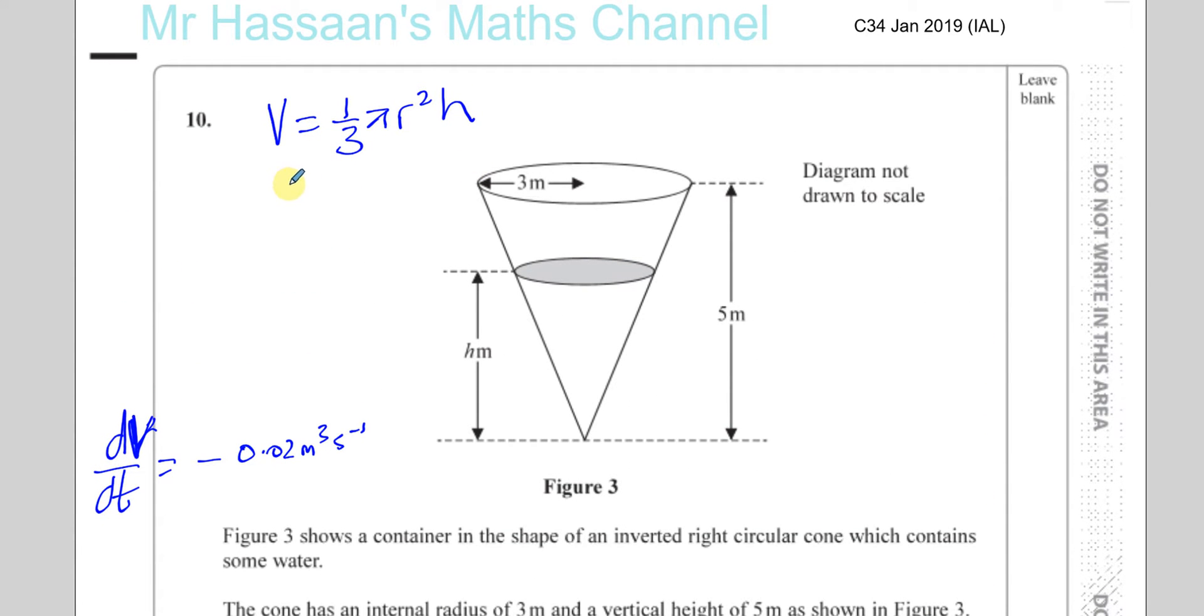Now the volume of a cone is given by this. We want to find dv/dh. Now the problem here is we have r, which is not in terms of h. And we need to express this r in terms of h. Otherwise I cannot differentiate this with respect to h, because r is also some function of h. So we need to find what r is in terms of h, and then we can differentiate this formula here.